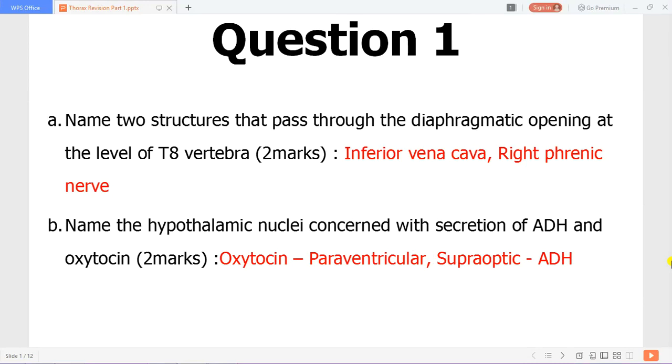The first question is name two structures that pass through the diaphragmatic opening at the level of T8 vertebra. Here we have the inferior vena cava and the right phrenic nerve.